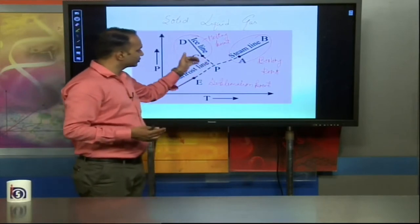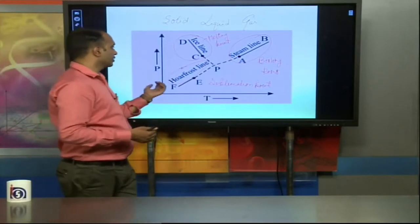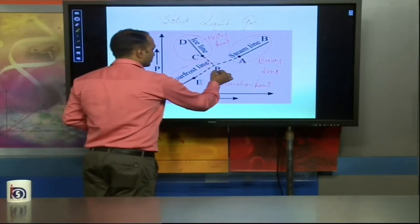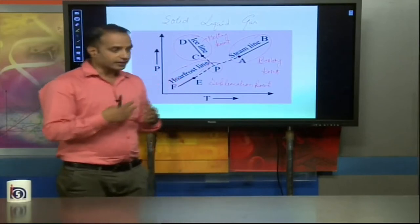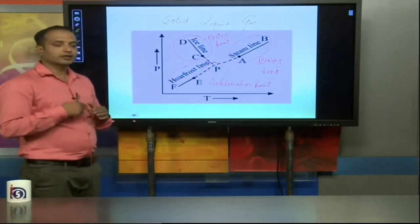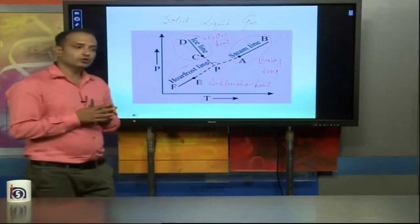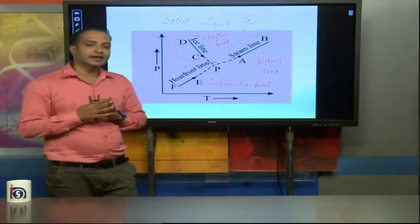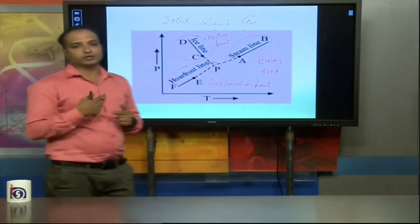When you extend these lines — extending from C through the dotted line, extending from A, and extending from E — all three lines join at point P, intersecting each other. This point P represents the triple point. The triple point indicates that at this single point, by increasing or decreasing pressure and temperature, the substance can convert from one state to another.